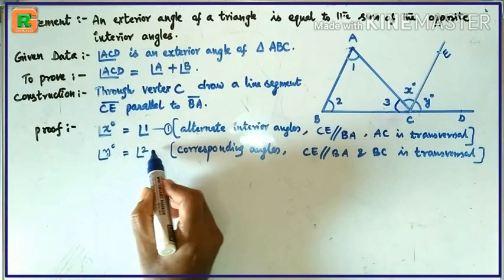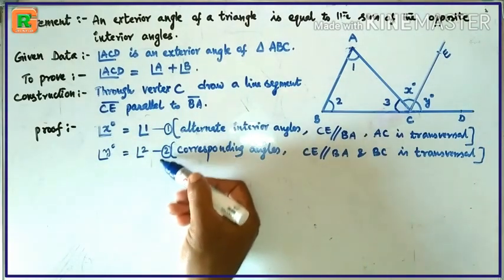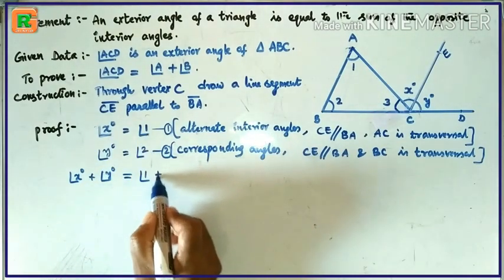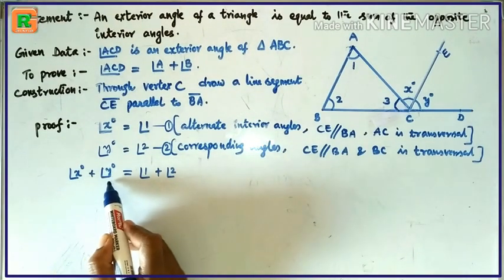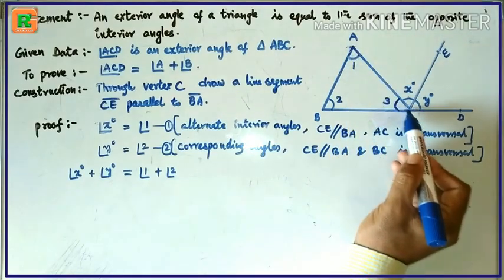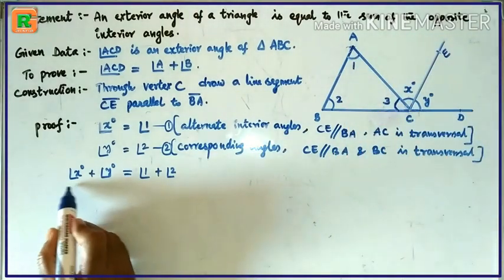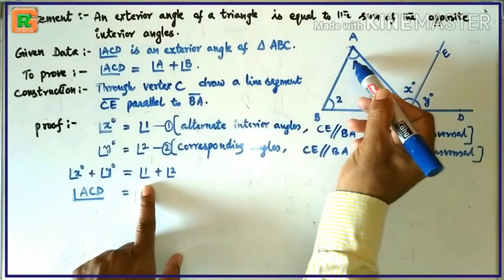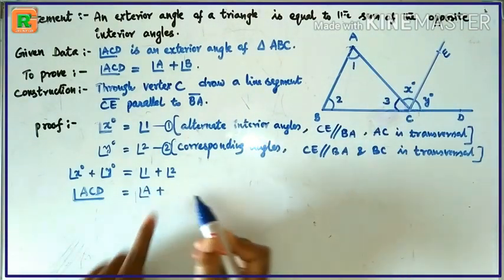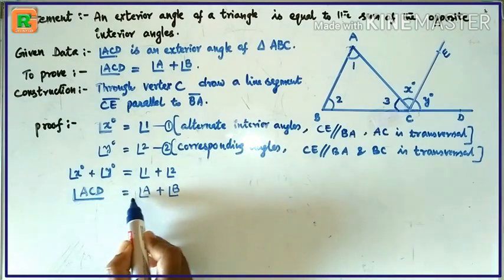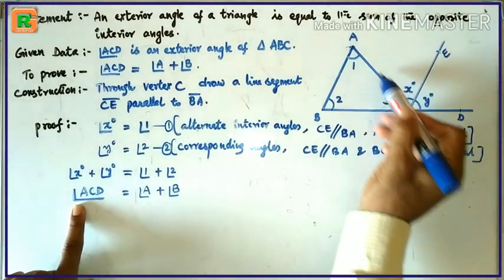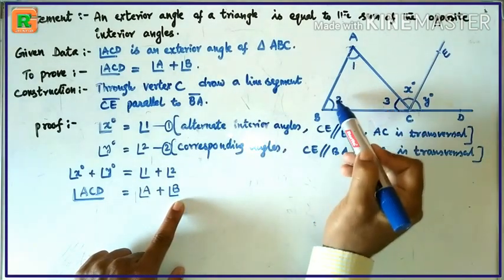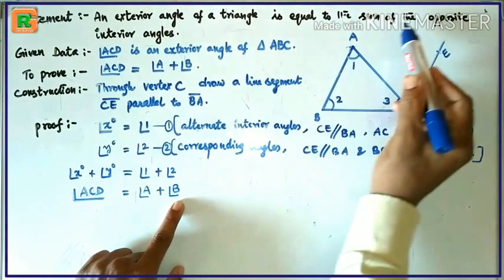By adding equation 1 and equation 2, we get angle X plus angle Y equals angle 1 plus angle 2. Observe that angle X plus angle Y together form angle ACD. So, angle ACD equals angle 1 plus angle 2, that is, angle A plus angle B. Angle ACD is the exterior angle of triangle ABC, and angle A plus angle B is the sum of the opposite interior angles.